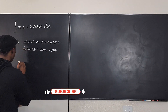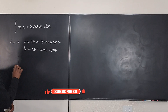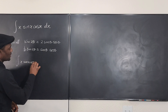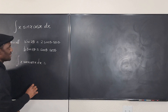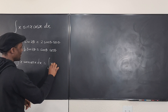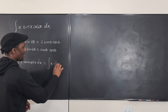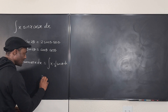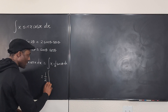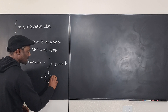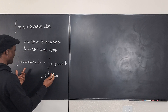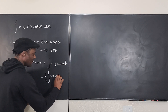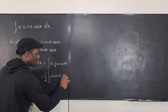So let's rewrite: (1/2)·sin(2θ) = sin(θ)·cos(θ). Now the integral of x·sin(x)·cos(x) dx can be rewritten as the integral of x times (1/2)·sin(2x) dx, which is the same as (1/2) times the integral of x·sin(2x) dx.